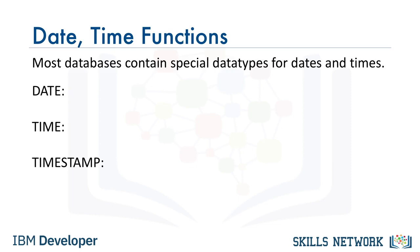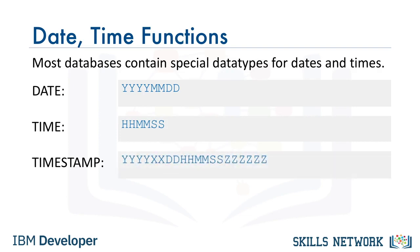In DB2, date has eight digits for year, month, and day. Time has six digits: hours, minutes, and seconds. Timestamp has 20 digits: year, month, day, hour, minute, seconds, and microseconds, where double x represents month and six z's represents microseconds.